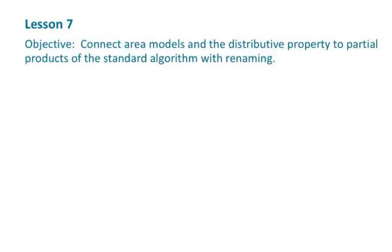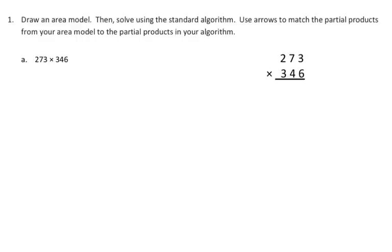So this is very similar to what they did in lesson 6. The example I'm going to use is from homework number 1, letter A, and the problem is 273 times 346. Again, we're going to do this using the area model and the standard algorithm, and I'll show you the arrows again just to see the connection between the two.